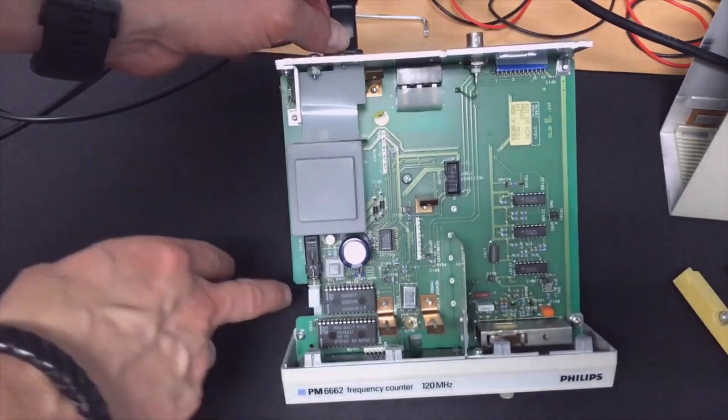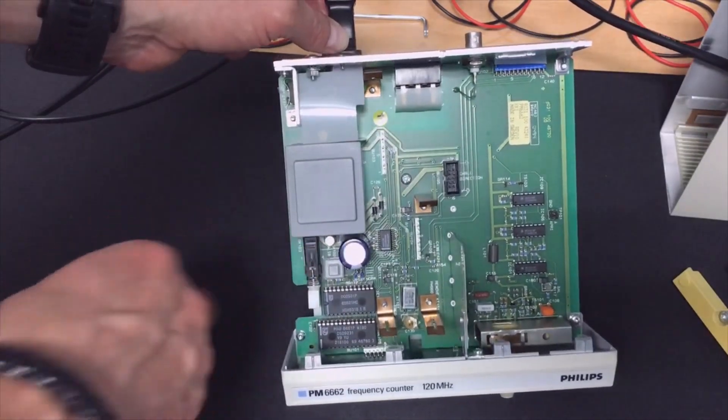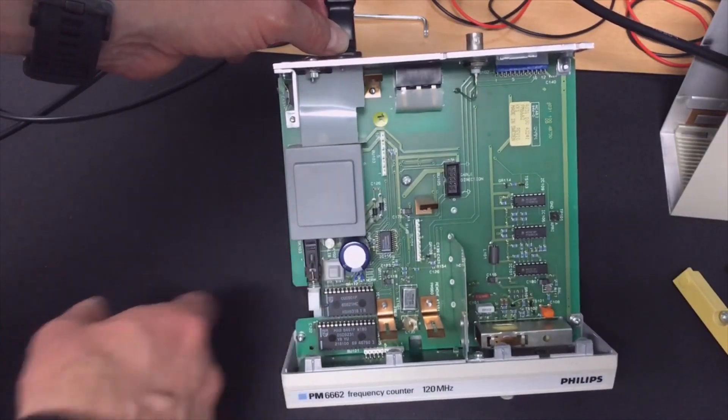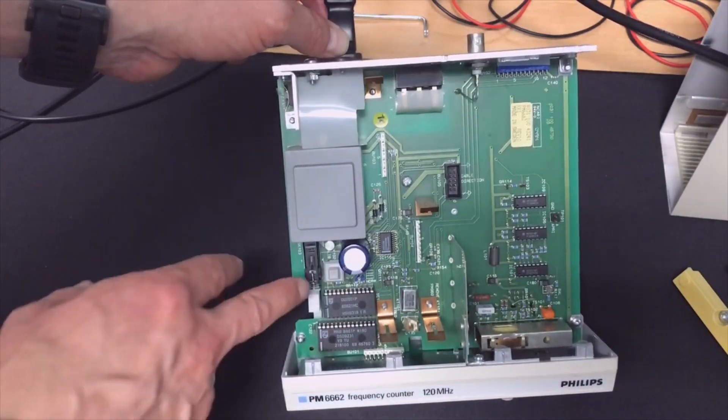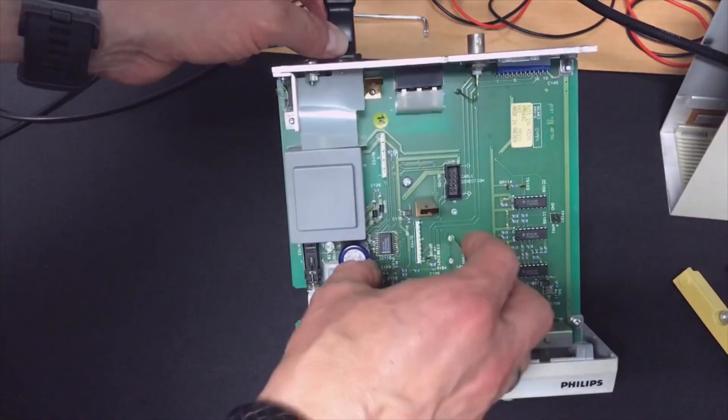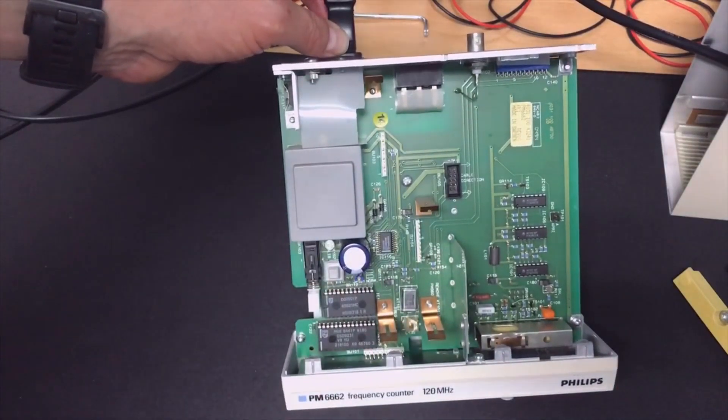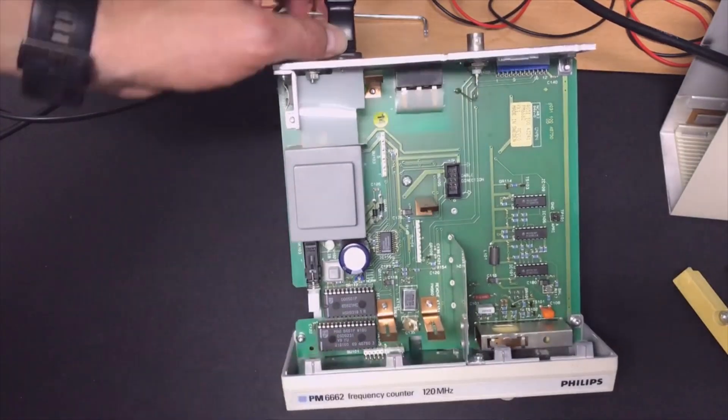But this confuses me. I see a button here that says Calib. There's a button to calibrate and a trimmer. Either this calibration is for the extra module on top, or... I wonder. I'll need to look in the service manual.